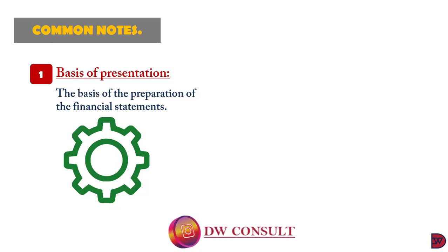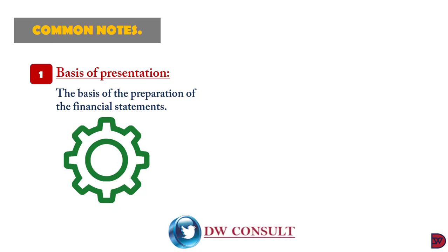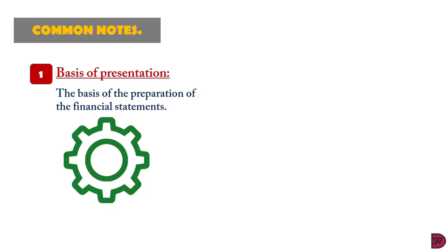It states the set of standards the accounts have been prepared in compliance with — for example, if prepared in conformity with IFRS, it states so. Those in the US will state whether it is prepared in compliance with Generally Accepted Accounting Principles, that is GAAP. It also has to state if the financial statements were prepared on a cash or accrual basis, or under historical cost conventions.